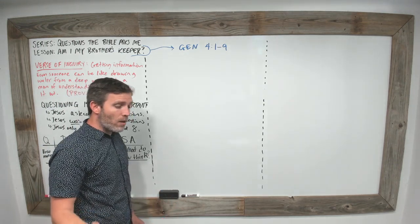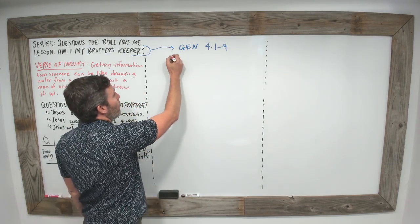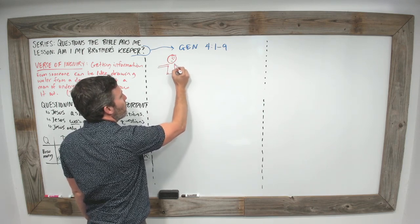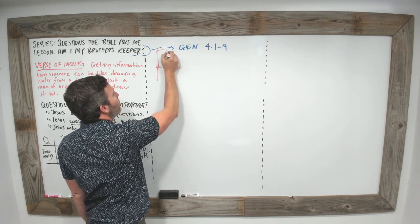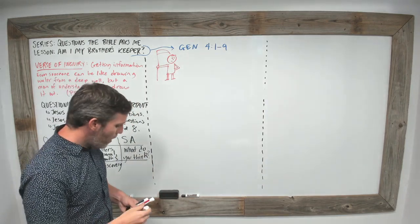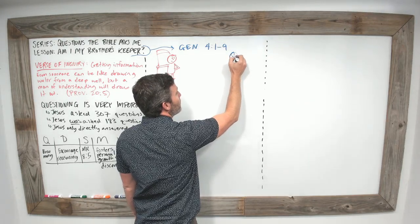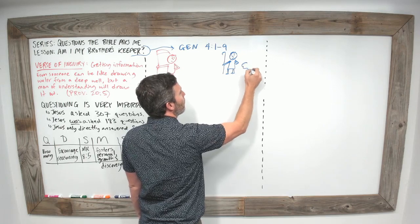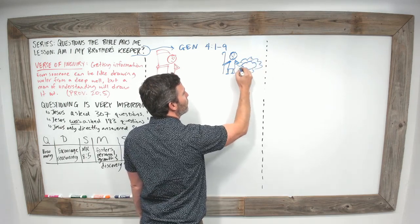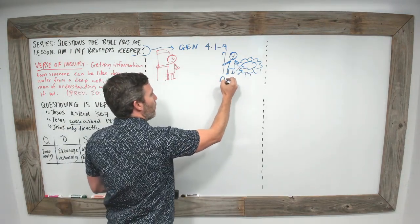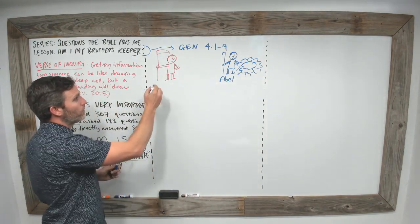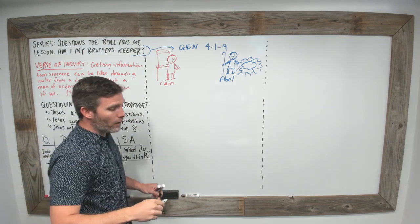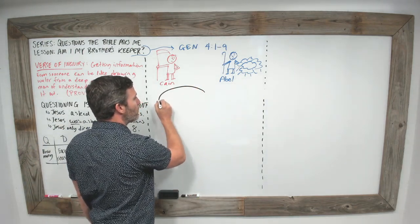In Genesis chapter 4, verses 1 through 9, we're coming across the firstborn and the secondborn naturally born people in the world—the sons of Adam and Eve. Adam and Eve were made by God, but after they fall from grace and are kicked out of the Garden of Eden, Eve has her first son, and his name is Cain. Cain, the Bible says, is a farmer, so he's the one who's called to work the land. Next, she gives birth to another son, and his name is Abel. Abel is a shepherd, and so he has responsibility over the flock.